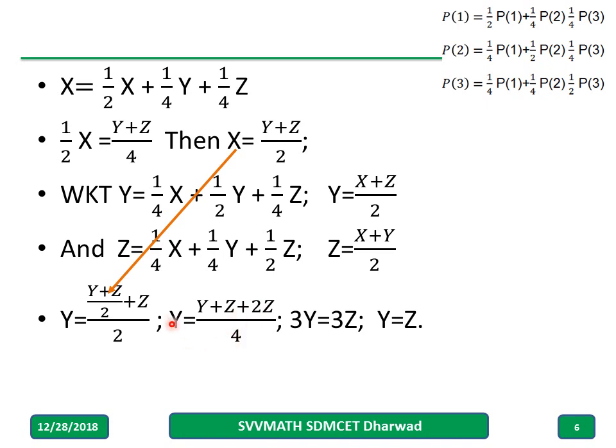Now, what I will do, it will become 4y equal to, and 1y is here, 4y minus 1y will become 3y. 3y equal to 3z, or I can say y equal to z.